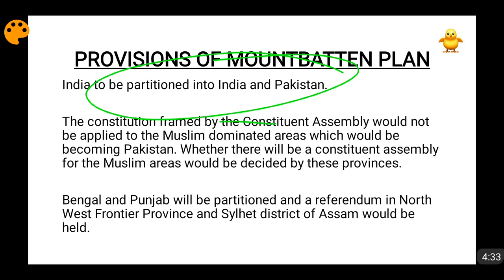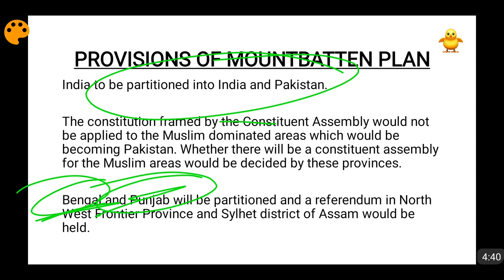It was also said that Bengal province and Punjab province, which had a majority Muslim population but also considerable numbers of other religions — for example, Sikhs formed a considerable proportion of Punjab's population — would be partitioned according to religious population distribution. So Bengal and Punjab were partitioned.